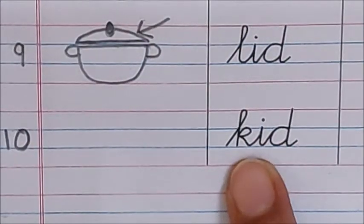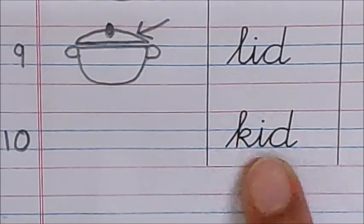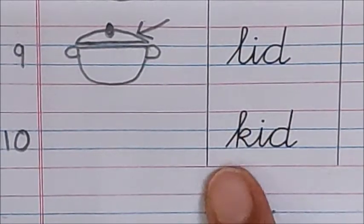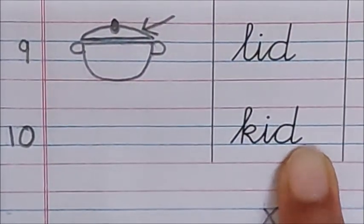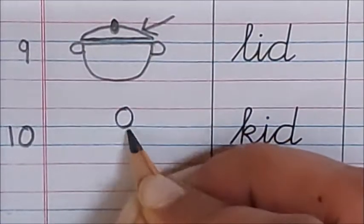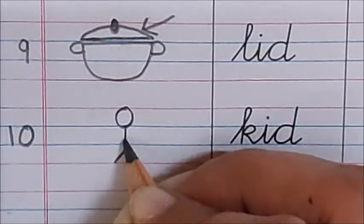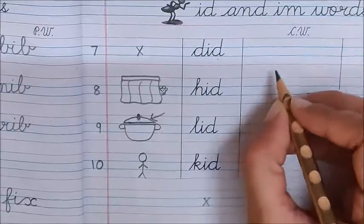Now, let us read the last word on this page. K-i-d. Kid. K-i-d. Kid. Kid means baccha. You all are kids. So, let us draw a kid here. This is a kid. Now, time to do writing. Say and write.